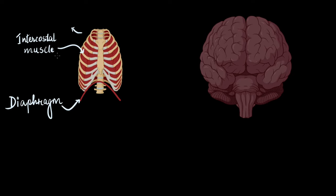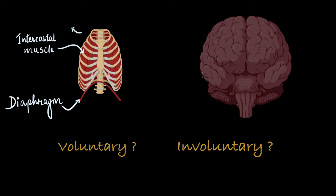Before I tell you which part of the brain controls breathing, let me ask you: what do you think breathing is? Is it a voluntary process — meaning do you have control over it — or is it an involuntary process? Think of when you are swimming underwater: you can hold your breath on your own will, so that means breathing is voluntary. But then think of while you are sleeping — do you put effort to breathe? Breathing happens without any conscious effort, so that means breathing is also involuntary.